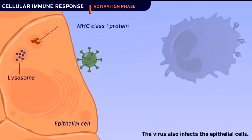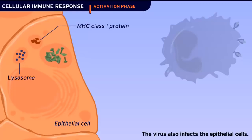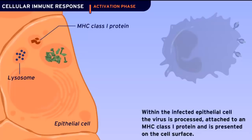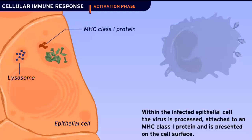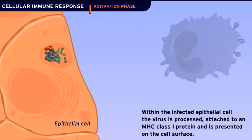The virus also infects the epithelial cells. Within the infected epithelial cell, the virus is processed, attached to an MHC class II protein, and is presented on the cell surface.